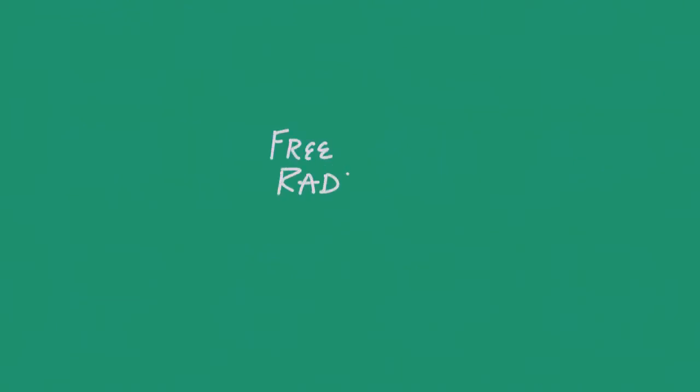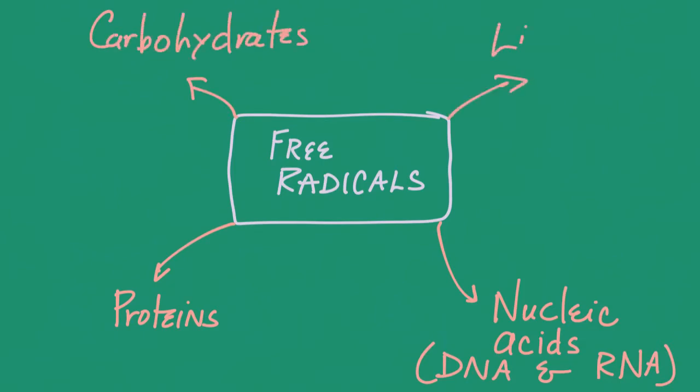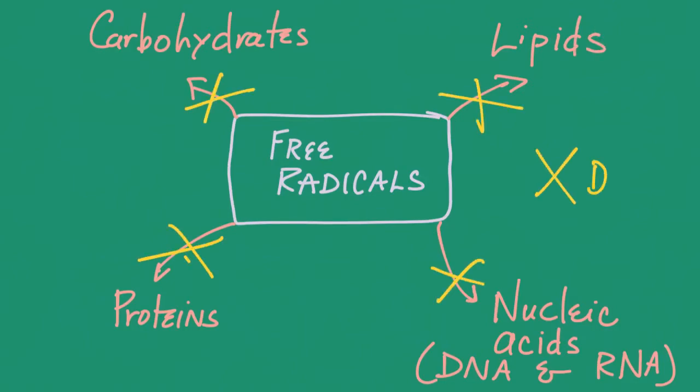Why are we even talking about free radicals? Free radicals can cause damage to macromolecules, and that can lead to a variety of problems. Free radicals can cause damage to proteins, damage to nucleic acids such as DNA and RNA, damage to carbohydrates, and damage to lipids. This damage results in aging, cancer, and heart disease.